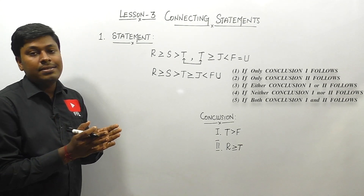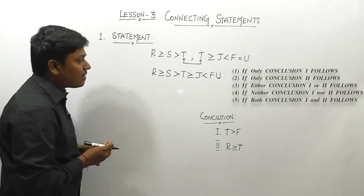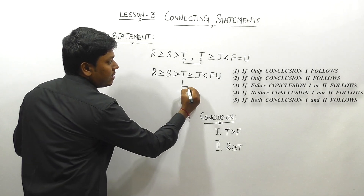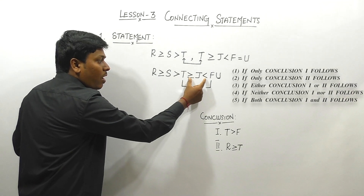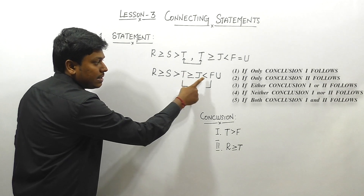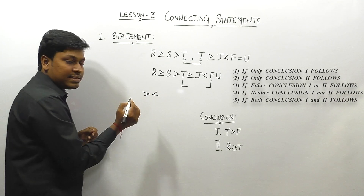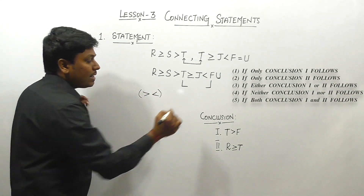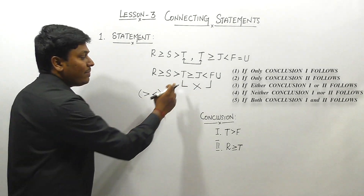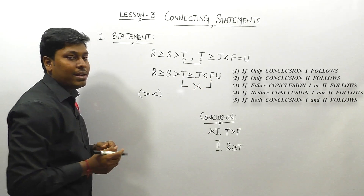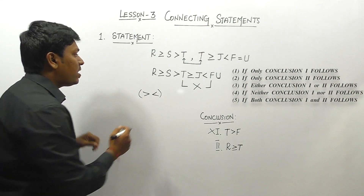Conclusion 1: T > F. Comparing T and F in the expression, between them we have the symbols > and <. When we find one greater-than and one less-than while comparing, the relationship cannot be established. So conclusion 1 is false. Conclusion 2: R ≥ T. Comparing R and T, between them we have two symbols: ≥ and >.